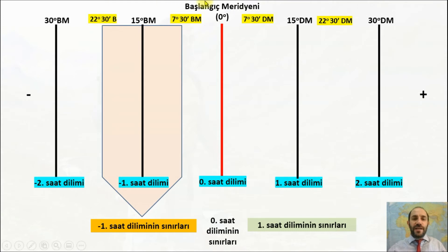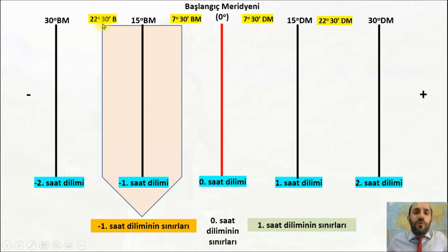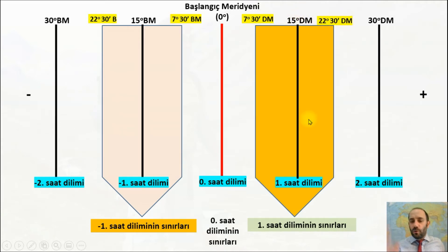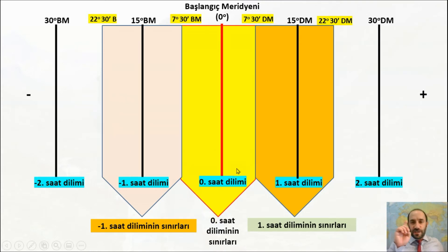Örneğin eksi 1 saat dilimi nerede? Greenwich'in batısında 7.5 ile 22.5 arası. Her 15 meridyende 1 saat dilimi değiştiği için bu saat diliminin merkez meridyeni 15 derece batı meridyenidir. Artı 1 saat dilimi de benzer şekilde 7.5 ile 22.5 derece doğu arası; merkez meridyeni 15 derece doğu. Sıfırıncı saat dilimi aynı zamanda 24. saat dilimi olarak da karşınıza çıkabilir.